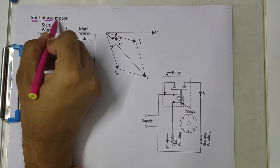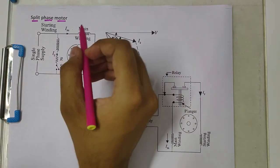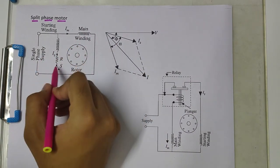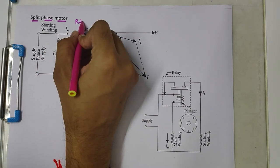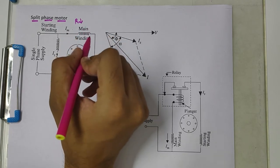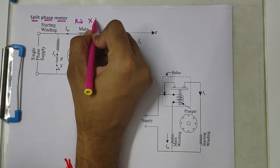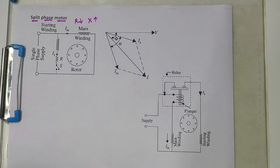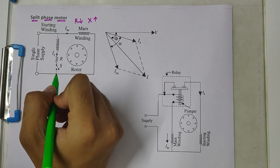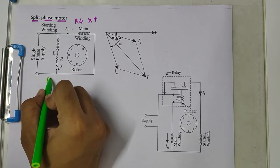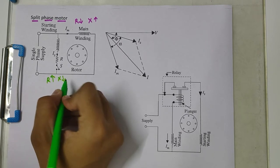Split phase motor is a type of single phase induction motor which has a main winding and a starting winding. The main winding has low resistance. The winding used in the main winding is such that it has low resistance and high reactance, whereas the starting winding combined is such that it has high resistance but low reactance.